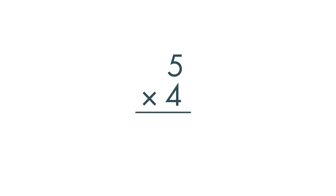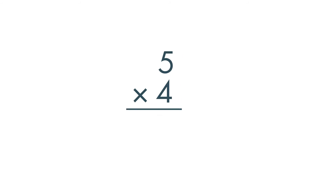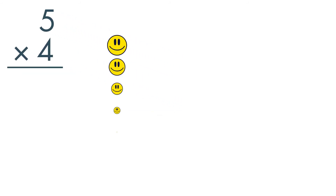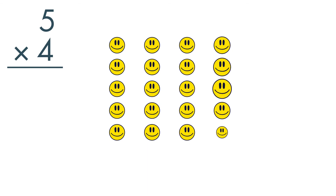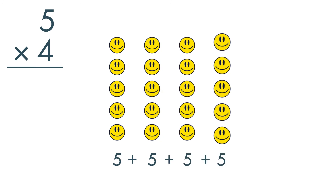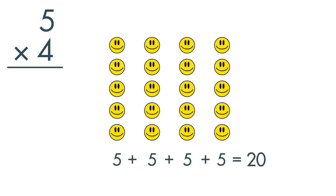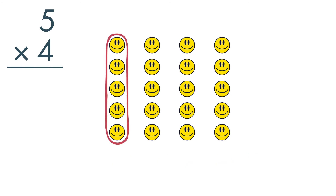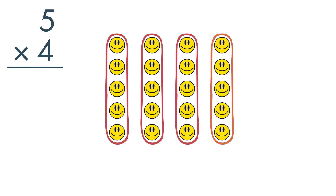Let's solve 5 times 4 using repeated addition. We'll draw 4 groups of 5. Now we can add: 5 plus 5 plus 5 plus 5 is equal to 20. Now let's solve the problem using multiplication. Use the picture of 4 groups of 5. 5 times 4 is equal to 20.